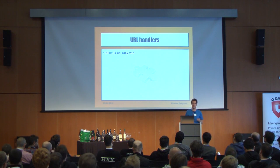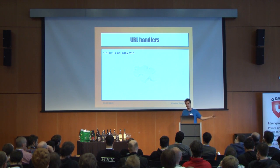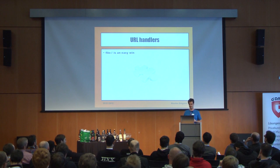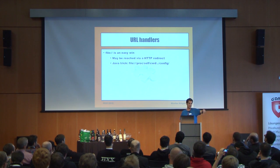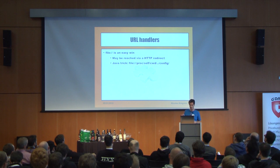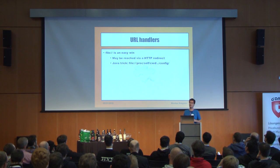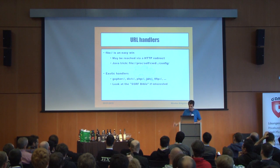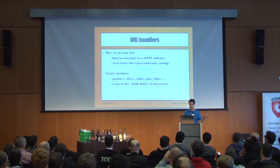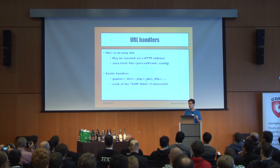If the file URL handler is available, you should use it and steal password files or configuration files — this is easy. In some specific scenarios you can reach files from HTTP: redirect via HTTP to your own server, then redirect to file, and access files on the backend server. If your target is using Java, you can use both proc and dot-dot to reach the configuration directory directly in one shot in blind mode. We also have tons of exotic handlers: dict, PHP, JAR, TFTP — not covered in this talk. If interested, look at the SSRF Bible made by some Russian friends. But I will focus on HTTP and HTTPS because they are always available.